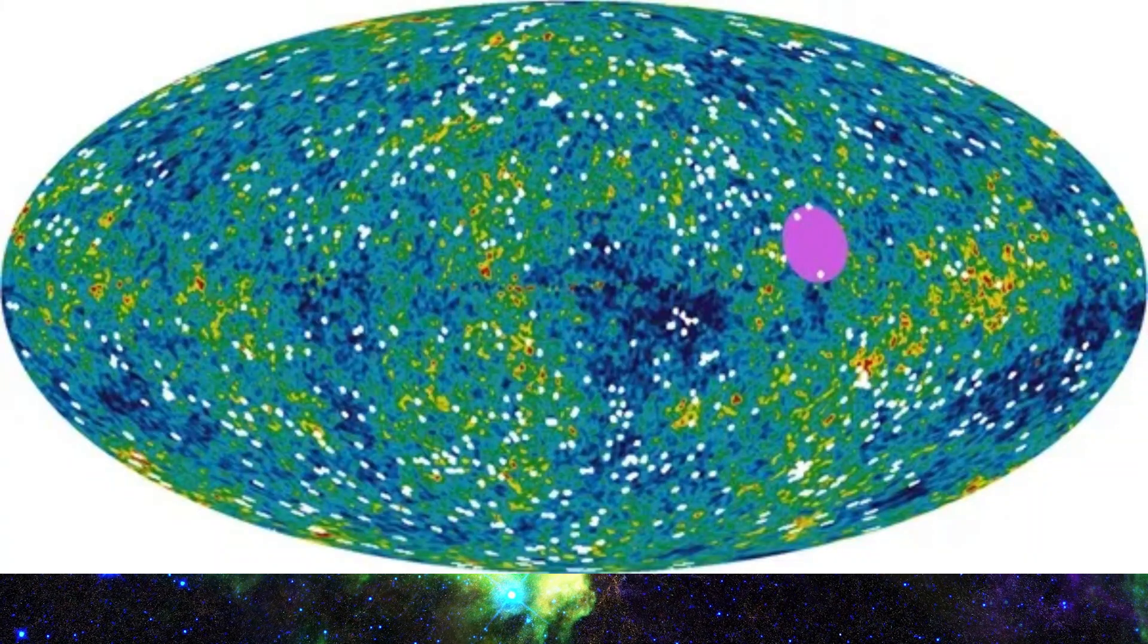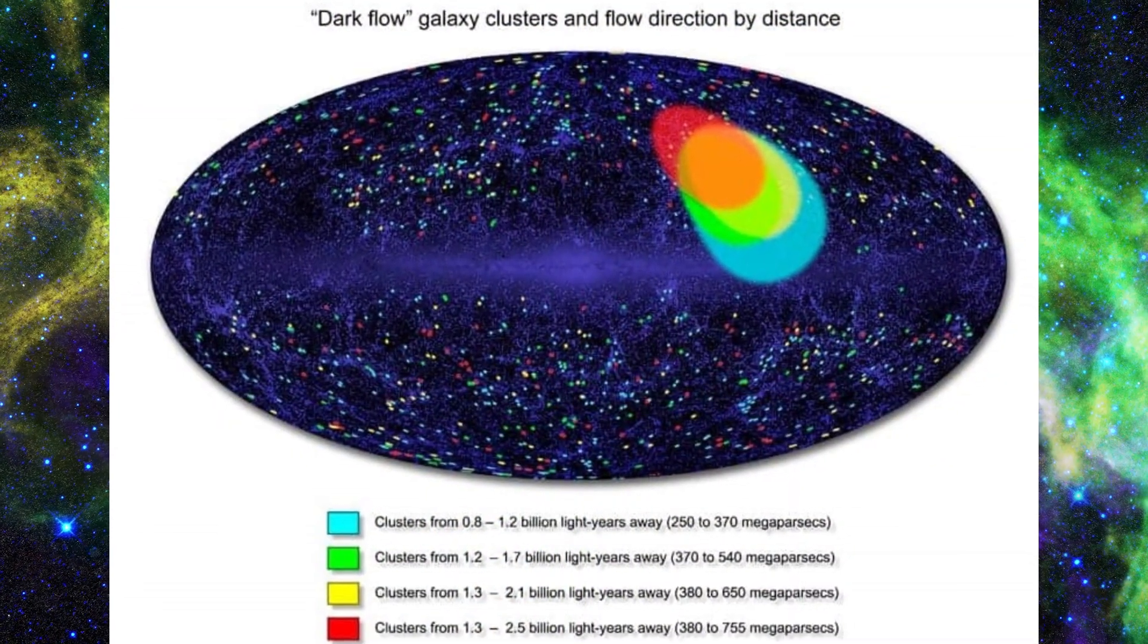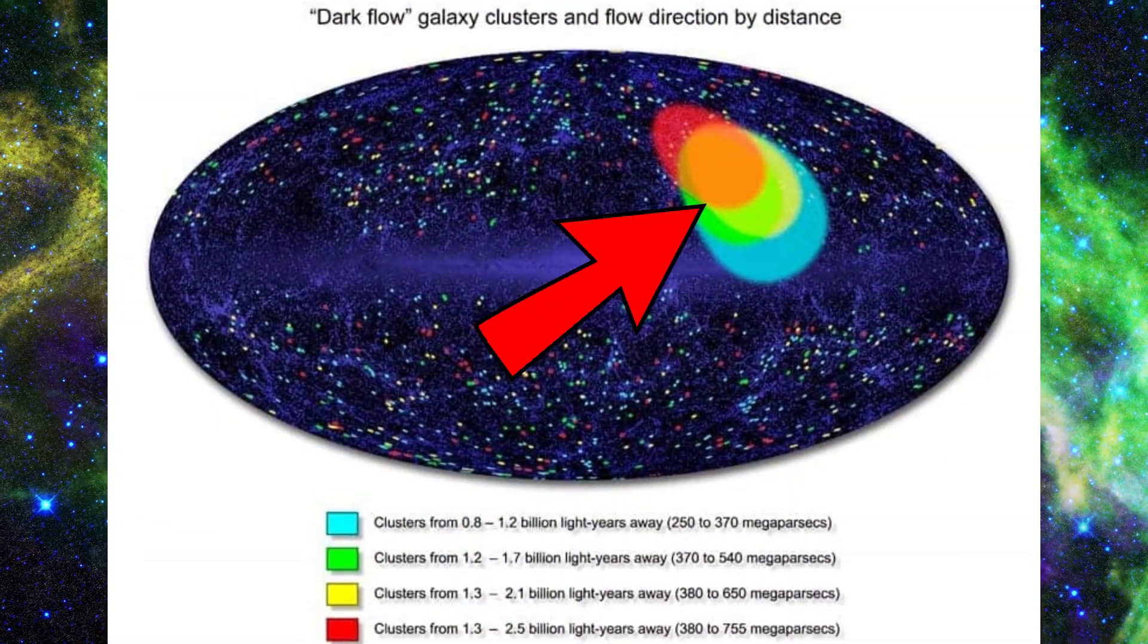However, Kashlinski et al. have claimed to have found a certain pattern, showing that some parts of the universe are being pulled stronger than others. This pull must stem from a strong force originating outside our observable universe.